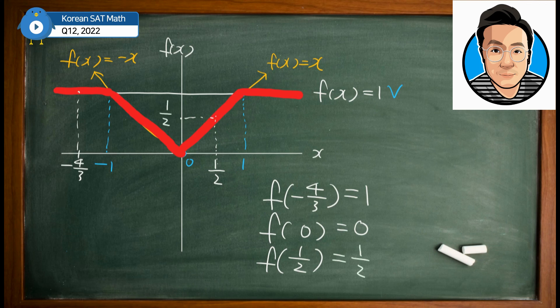That's why if you add up these three values, then it has to be equal to 1 + 1/2 = 3/2. So the answer for this question is 3/2. I'll be back with more videos for more questions from Korean SAT math for the year 2022. Thank you.